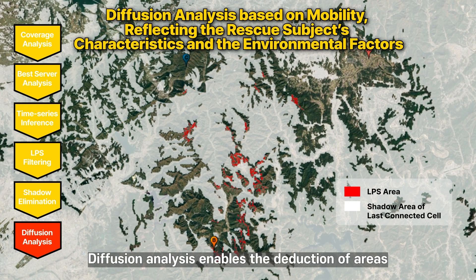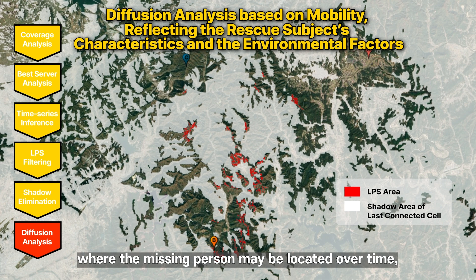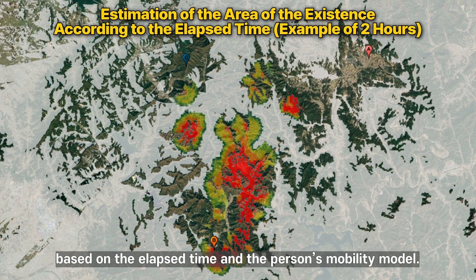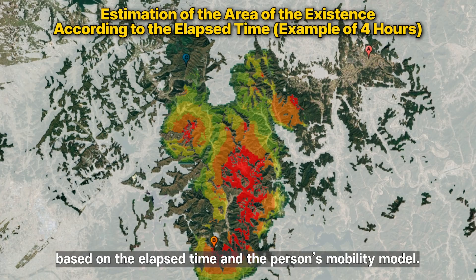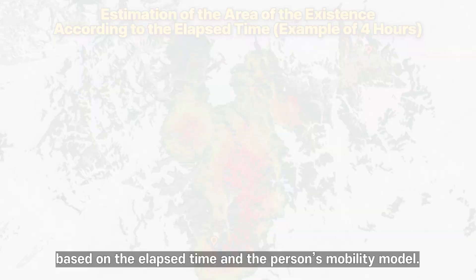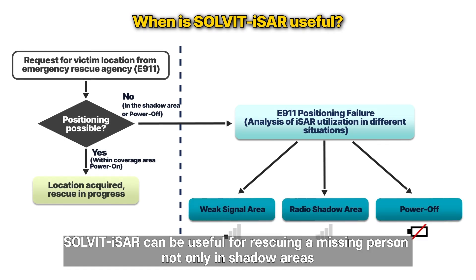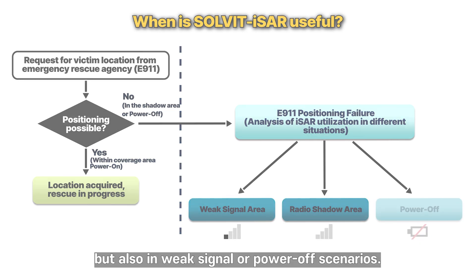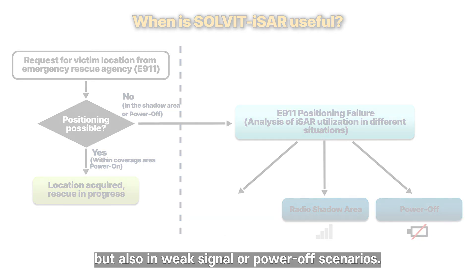Diffusion analysis enables the deduction of areas where the missing person may be located over time, based on the elapsed time and the person's mobility model. Solvet-ASR can be useful for rescuing a missing person not only in shadow areas but also in weak signal or power-off scenarios.